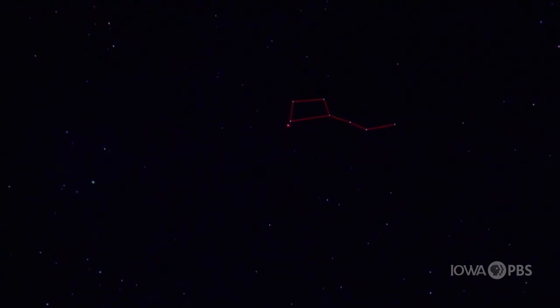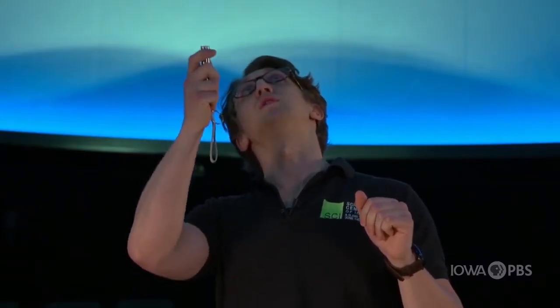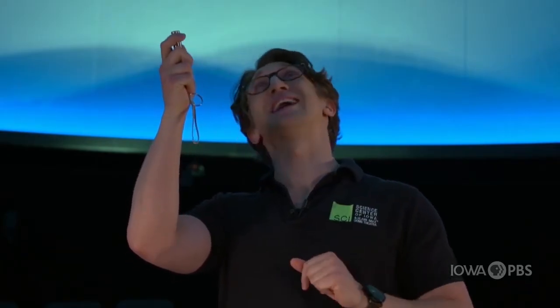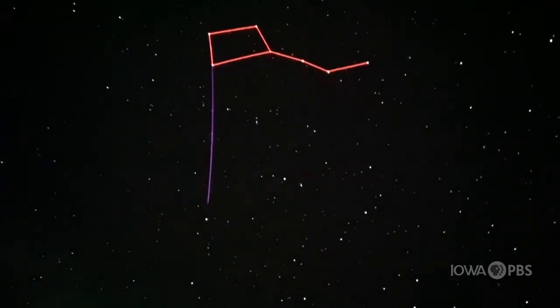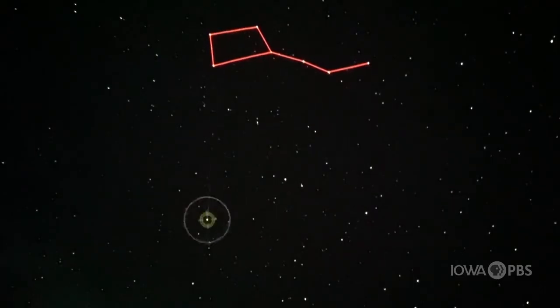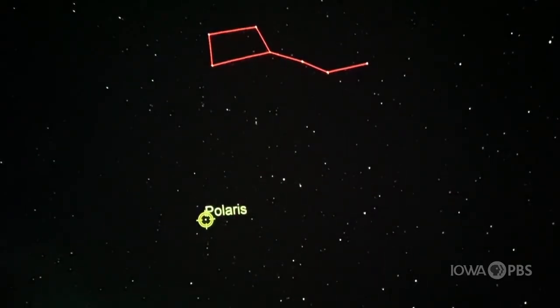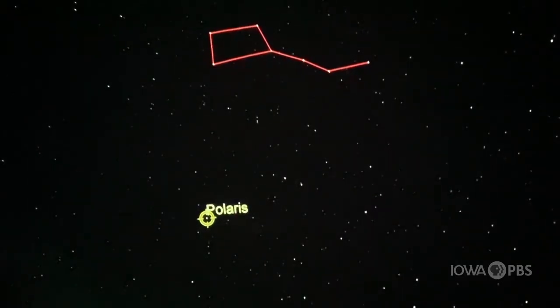You're going to trace a line from Merak all the way to this star over here, which is named Dubhe. We've created this nice line between these two stars, and now we want to extend that line all the way to this star over here, which is named Polaris. You might know Polaris by another name: the northern star.